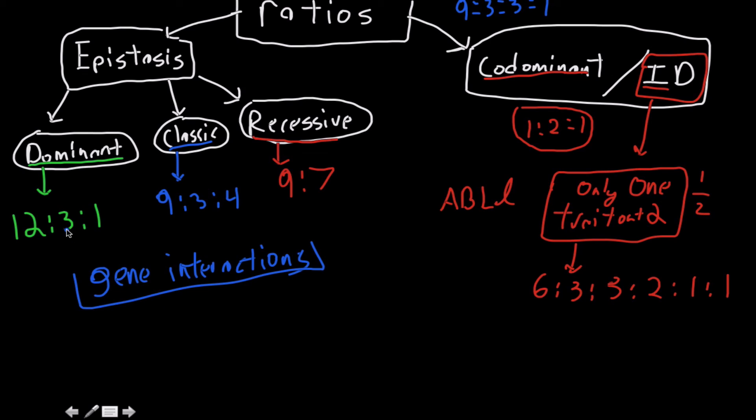So any time you have a variation of that, you're definitely having one of these things going along. But for gene interaction, the two examples that were given is a 9 to 6 to 1, and then a 9 to 3 to 4 as well, which is another example of classic epistasis.